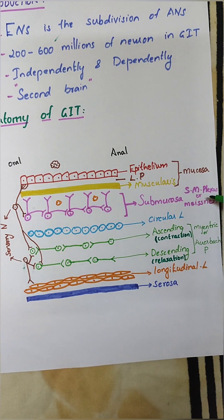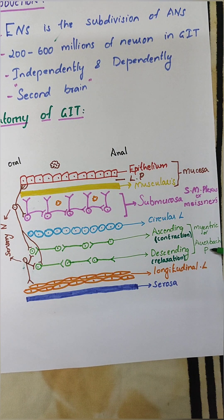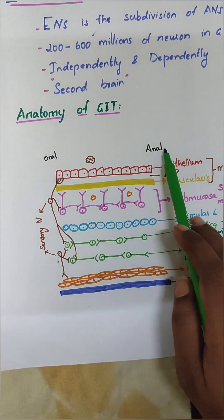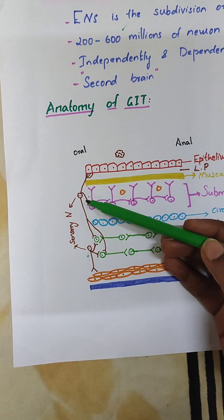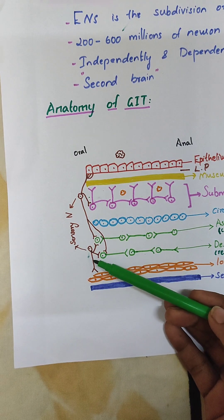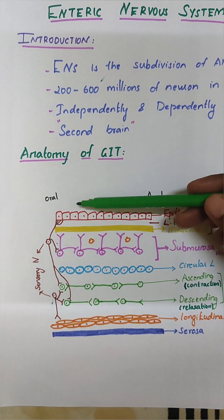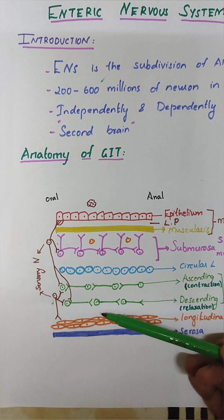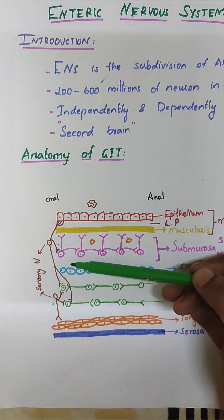The submucosal plexus or Meissner's plexus mainly deals with the secretions of the glands, and the myenteric plexus or Auerbach's plexus mainly deals with the motility of food from the oral cavity towards the anal canal. There are also sensory neurons present in both the submucosal plexus and the myenteric plexus, connected to the epithelium and to both the ascending and descending nerve fibers. All are interconnected.